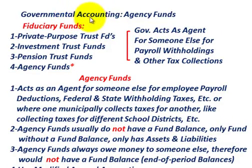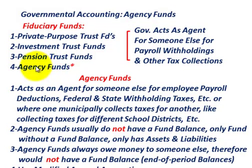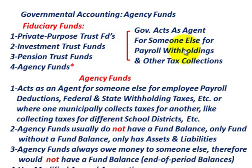We're going to be going over governmental accounting for the agency fund. The agency fund is part of the fiduciary funds under governmental accounting, which include the private purpose trust fund, the investment trust fund, the pension trust fund, and the agency funds. The agency fund is where the government acts as an agent for someone else — for payroll withholdings and other tax collections.